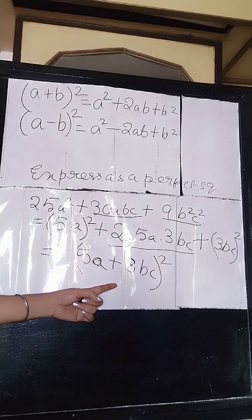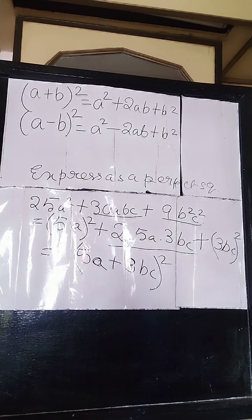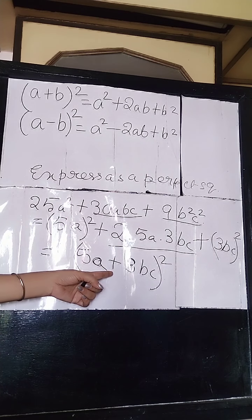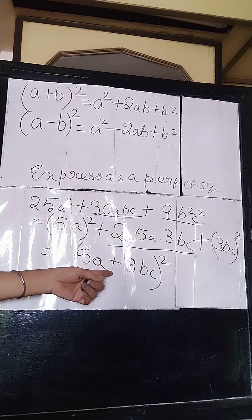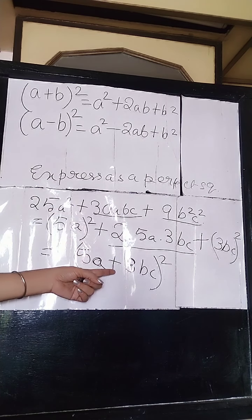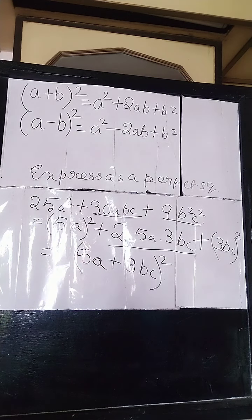You will express the given sum as the sum or subtraction of two terms in perfect square form. If a plus sign is given it will be the sum of the perfect square; if a minus sign is given it will be the subtraction of the two terms and the square of it.